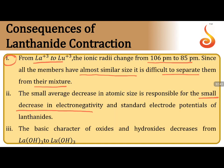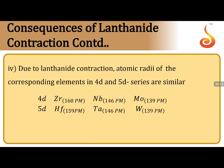Consequences of lanthanide contraction: (1) Separation of lanthanides becomes difficult because of their very similar sizes (ranging from ~106 pm for La to ~85 pm for Lu). (2) Electronegativity decrease is very small. (3) Reduction potentials are comparable to alkaline earth metals, making them very reactive. (4) Basic character of oxides and hydroxides decreases from lanthanum to lutetium as size decreases. Due to lanthanide contraction, pairs like Zr/Hf, Nb/Ta, and Mo/W show similar atomic radii.